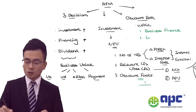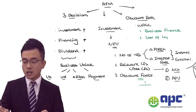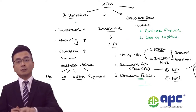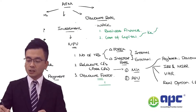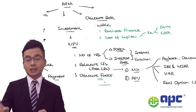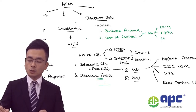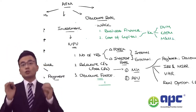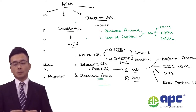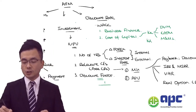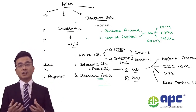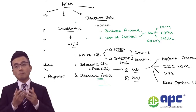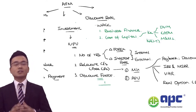We will need to calculate the cost of capital — in particular, the weighted average cost of capital. We need to calculate the cost of equity using the dividend valuation model, the capital asset pricing model (CAPM), or the M&M proposition number two formula. We also need to calculate the cost of debt — because having interest expense allows us to save tax, so we need to multiply by one minus the tax rate.